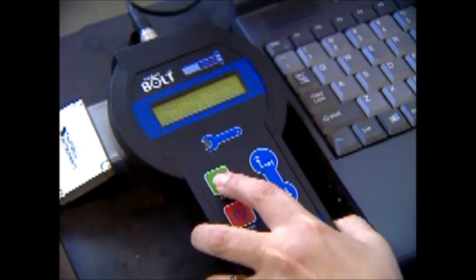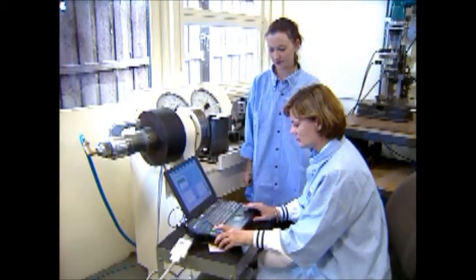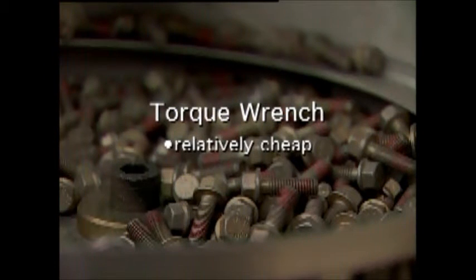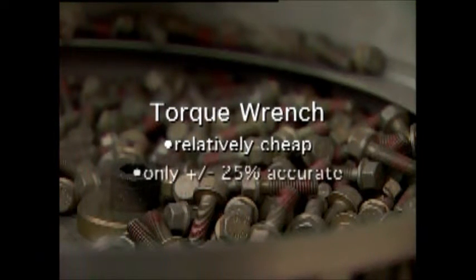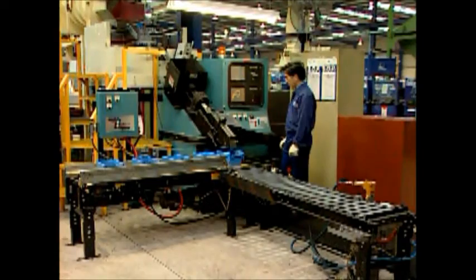Existing bolt tightening techniques vary in terms of cost and accuracy. For example, one of the most common forms of tightening a bolt is by using a torque wrench. This method is relatively cheap, but has been measured as having only plus or minus 25% accuracy, due mainly to the vagaries in the torque-tension relationship.